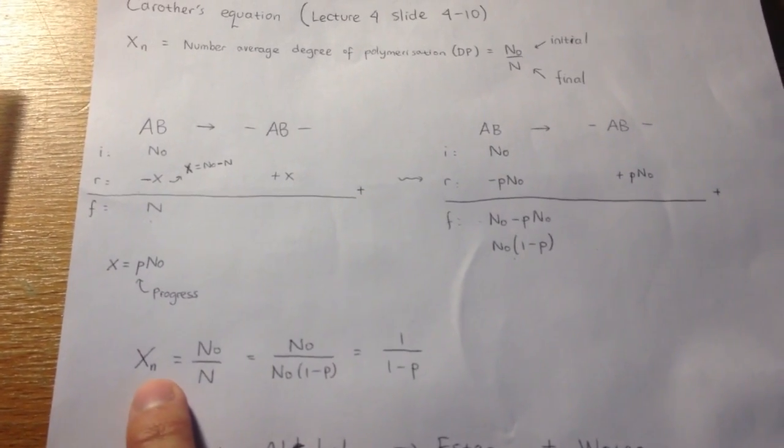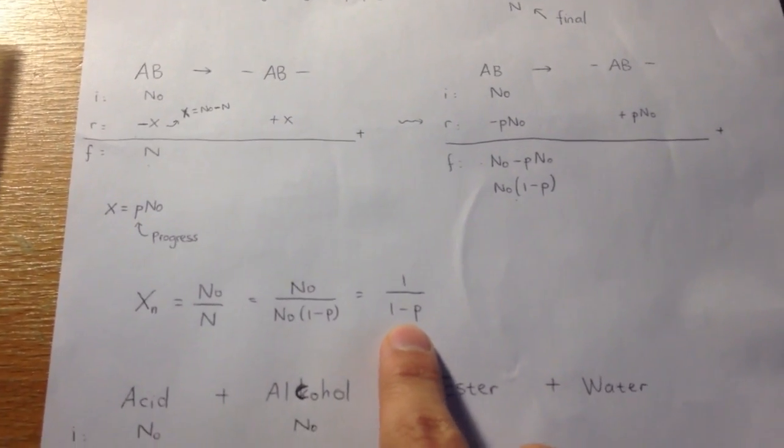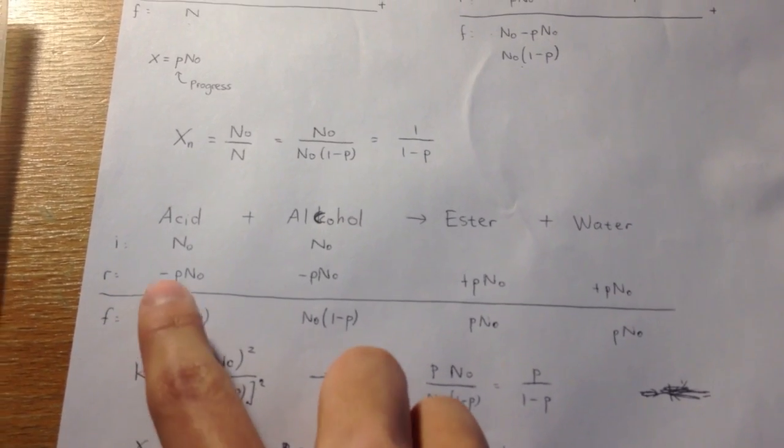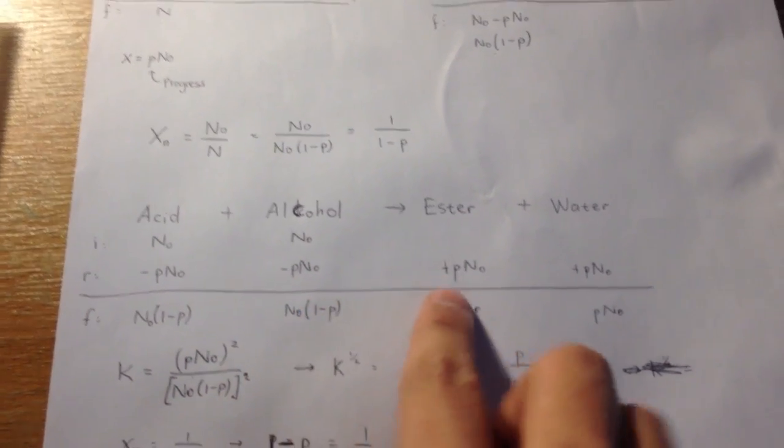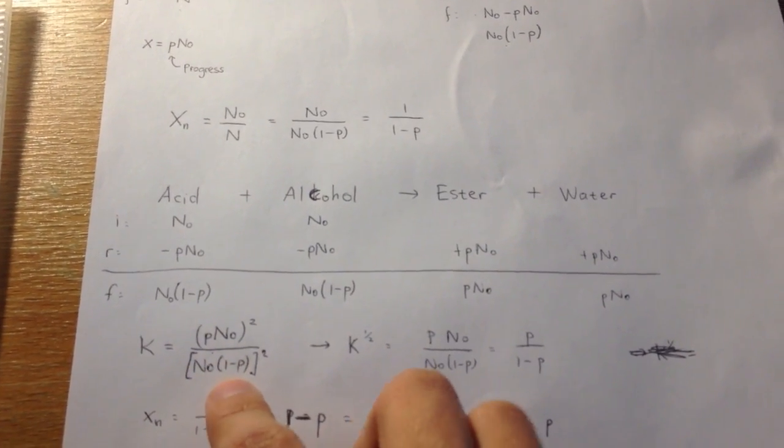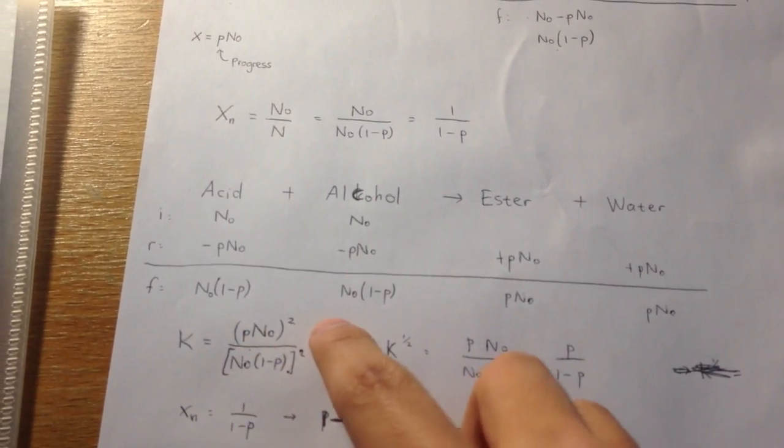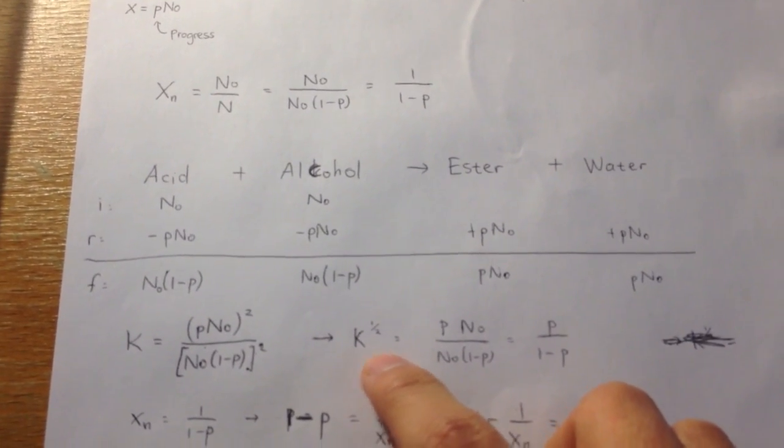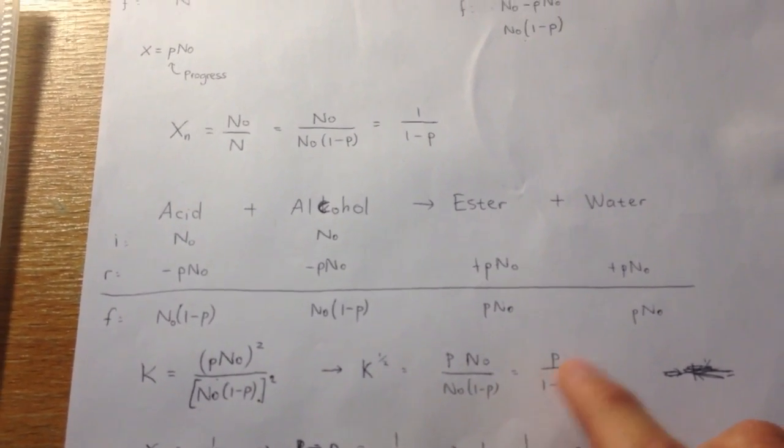So I could say Xn becomes like this. And for connecting with equilibrium constant, we use the same. Minus P n0, minus P n0, plus P n0. Equilibrium constant is just products over reactants. And if you notice this is squared over squared, so I can say K half or root K equals P n0 over n0 times (1 minus P), or P over (1 minus P).